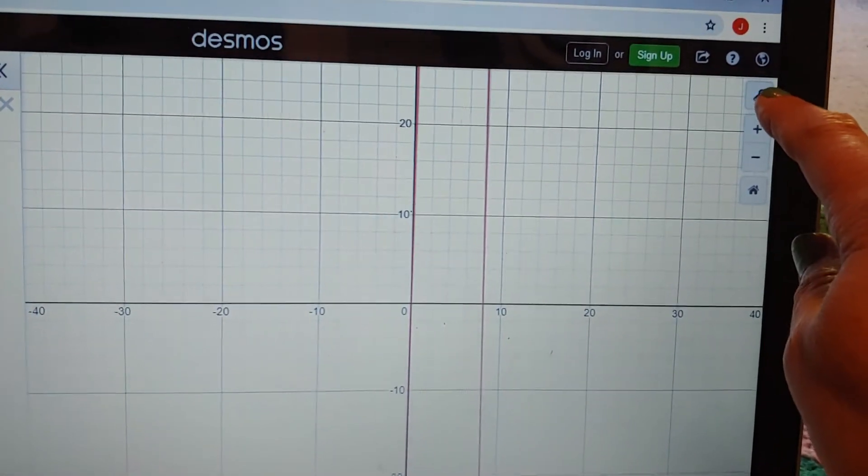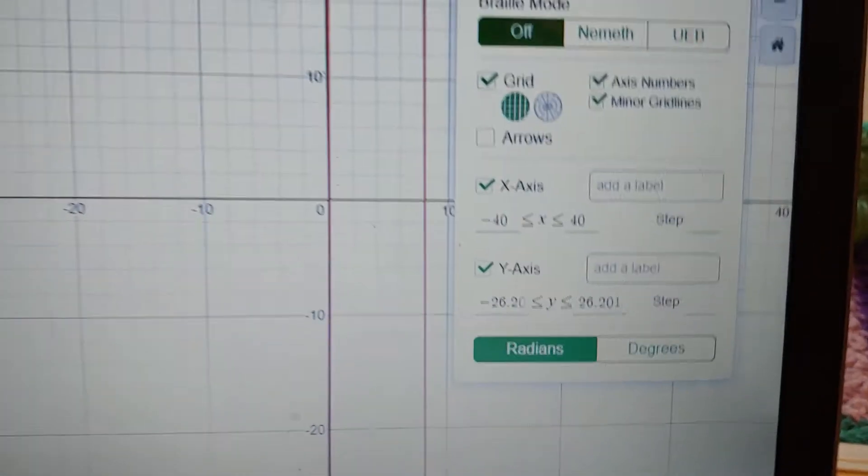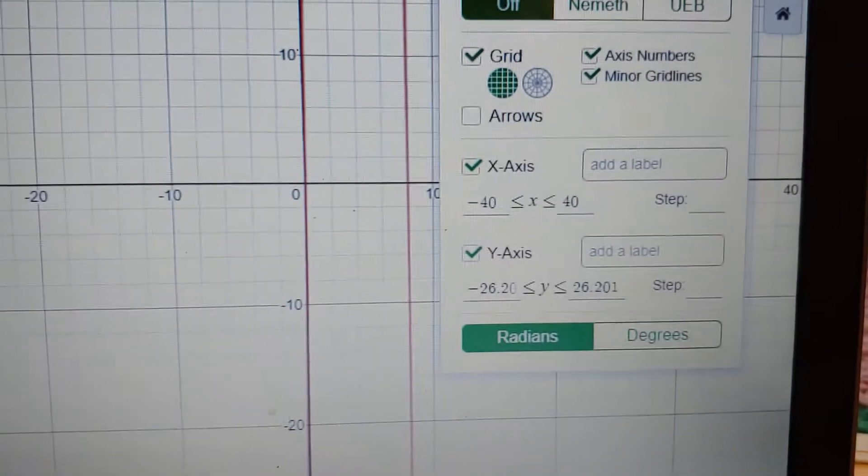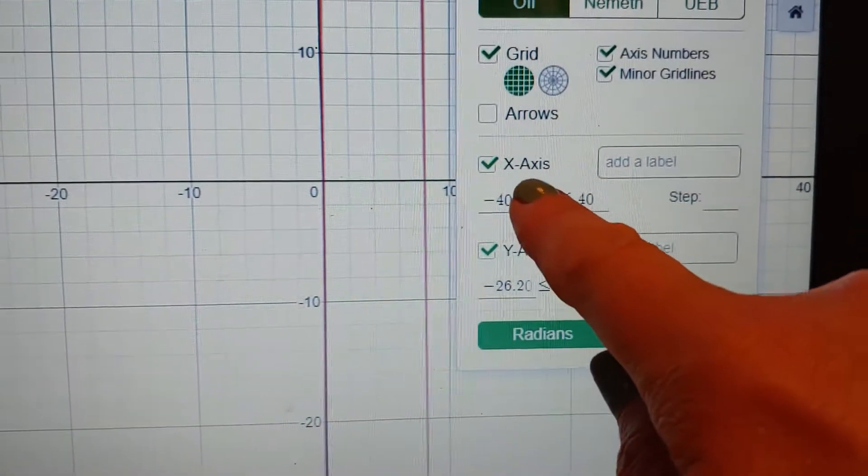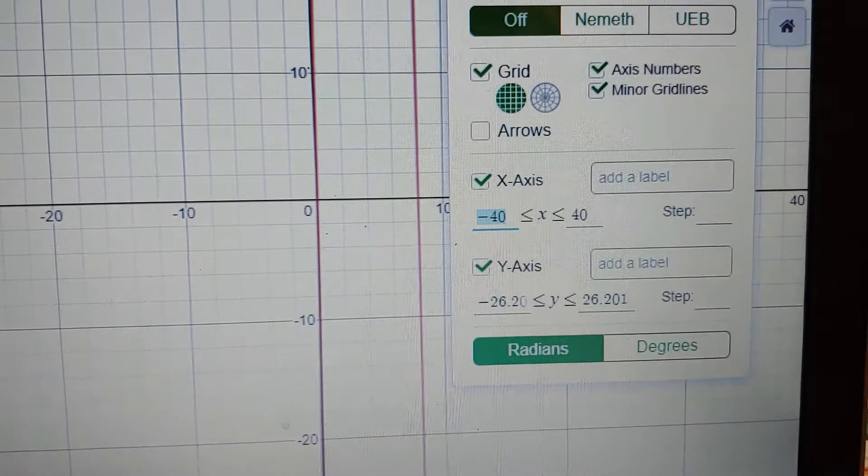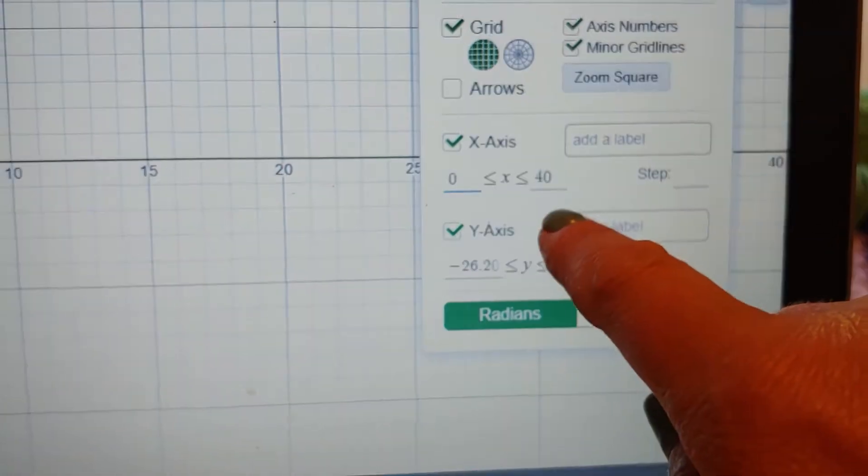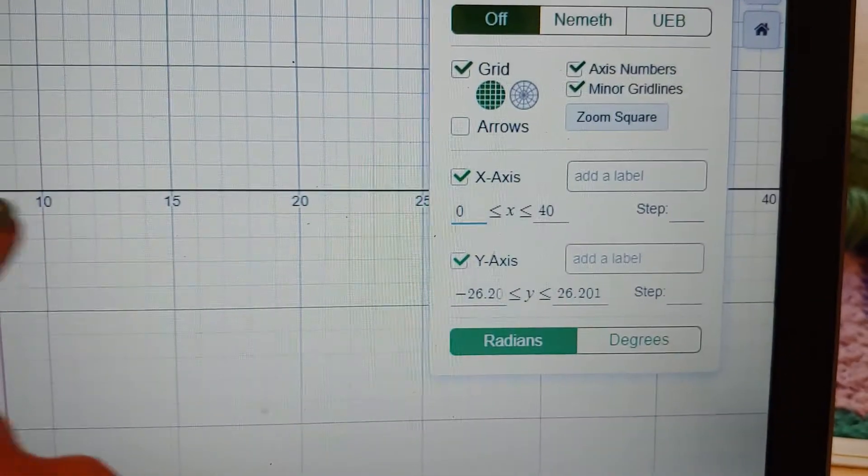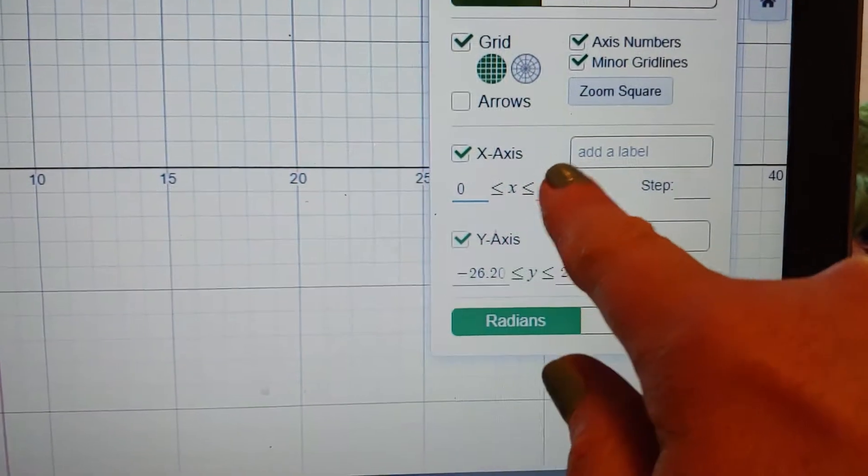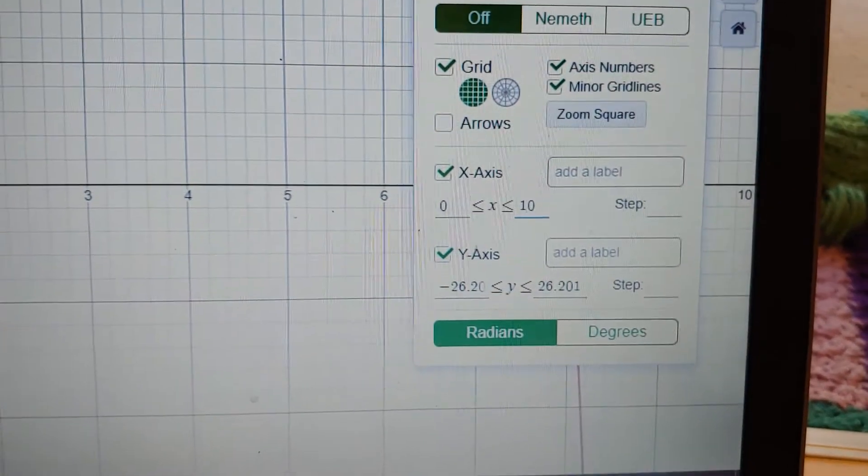but what we can do also is this little wrench will show you how to change the x-axis and the y-axis. So for the x-axis, I'm going to just have it start at zero. And you know, we don't need that graph that big, so let's say we go to 10.